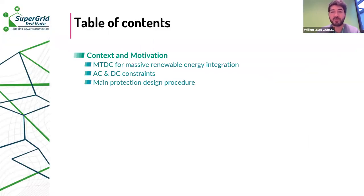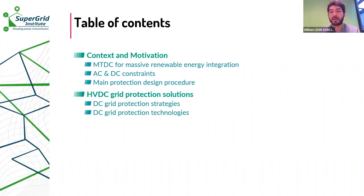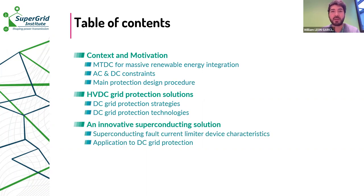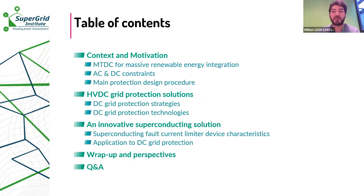The presentation covers the following contents: the context and motivation, discussing the role of multi-terminal HVDC for massive renewable energy integration, AC and DC constraints for protection design, and the main protection design procedure. The next section covers HVDC grid protection solutions and DC grid protection strategies and technologies. We will then explore an innovative superconducting solution for DC protection, including characteristics of a superconducting fault current limiter and its application, followed by a summary and Q&A session.